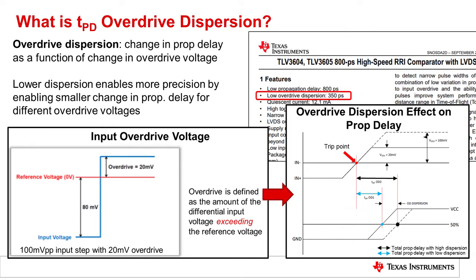What is overdrive dispersion? It's defined as the change in prop delay as a function of the change in overdrive voltage. If we look at the inputs of a comparator, one pin is always tied to a reference, and the other will trigger when it exceeds that reference. Depending on the input signal, it may exceed the reference by just a few millivolts or by a much greater factor of several volts. This amount of overdrive voltage has a direct effect on the prop delay — with a much stronger, higher overdrive, the comparator reacts faster, effectively creating a faster response than if a lower overdrive tripped the input.